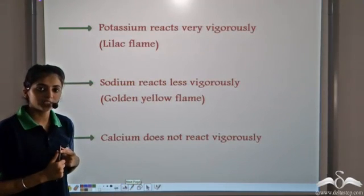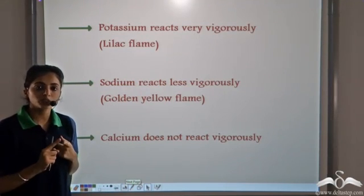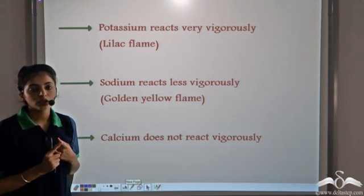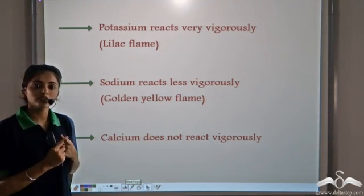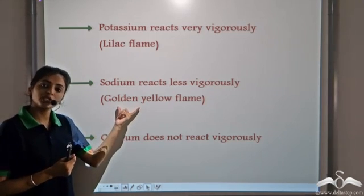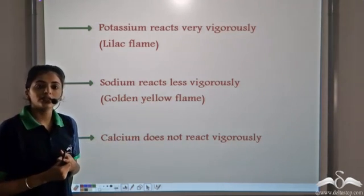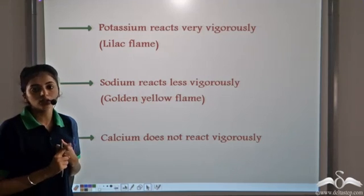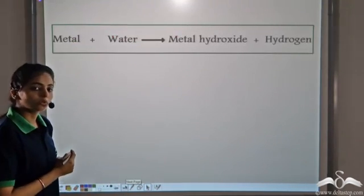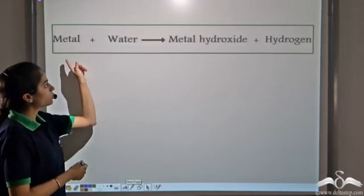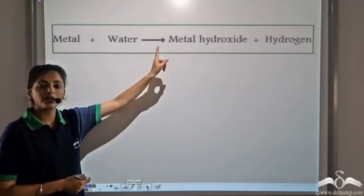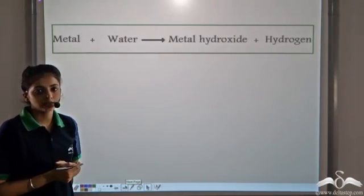So these are the three observations: Potassium reacts with water very vigorously and burns with a lilac flame. Sodium reacts with water in a less vigorous manner and burns with a golden yellow flame. The reaction of Calcium with water is not vigorous. In all cases, when metals react with water, they form the corresponding hydroxide and release Hydrogen gas.